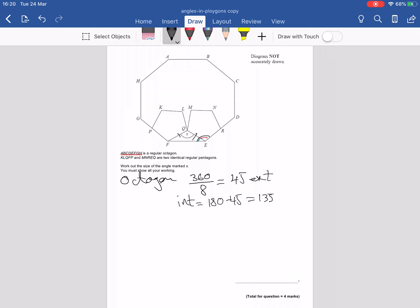I'm going to do the same for the pentagon. So I'm going to do 360 divided by number of sides to work out the exterior. So 360 divided by 5 is 72, and that's an exterior angle.